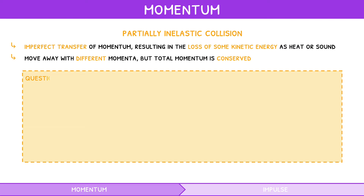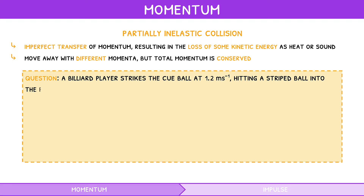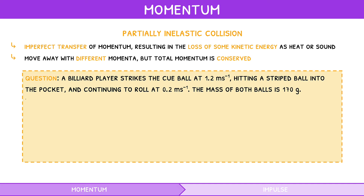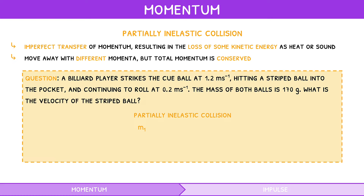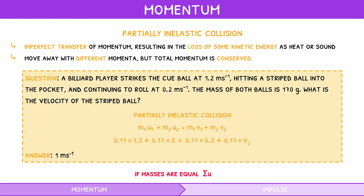Let's look at an example question. A billiard player strikes the cue ball at 1.2 m/s, hitting a striped ball into the pocket and continuing to roll at 0.2 m/s. The mass of both balls is 170g. What is the velocity of the striped ball? Using the default formula: mass 1 times initial velocity 1 plus mass 2 times initial velocity 2 equals mass 1 times final velocity 1 plus mass 2 times final velocity 2. Rearranging gives a velocity of 1 m/s. Note: if masses are equal, the sum of the initial velocities will equal the sum of the final velocities for inelastic and partially inelastic collisions.